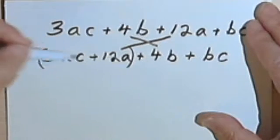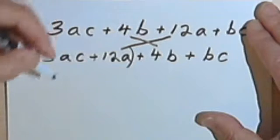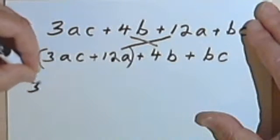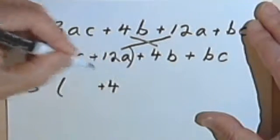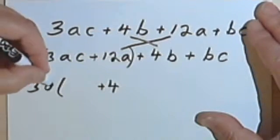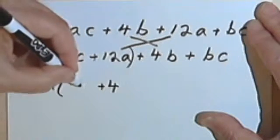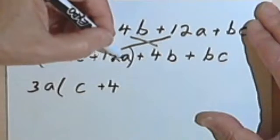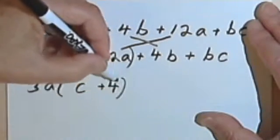So putting my parentheses around the first two terms, I've got 3ac plus 12a. I'm going to factor out a 3. My second term will begin with 4, and I can factor out an a from both of them. That will give me an a here. My first term inside the parentheses is just going to be a c. And since I factored a 3a out of 12a, all I'm left with is the 4.